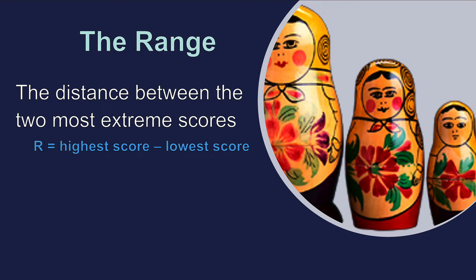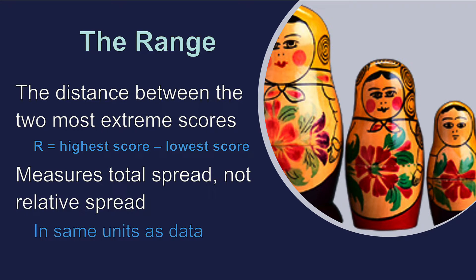A third way to measure variability within our data is to consider the difference between the highest score and the lowest score — the largest minus the smallest. This is called the range. A range is the distance between the two most extreme scores. Unlike other more popular measures of dispersion, the range measures the total spread, not the relative spread in the data. As such, the range is measured in the same units as the variable of reference, and therefore allows us to interpret it directly.